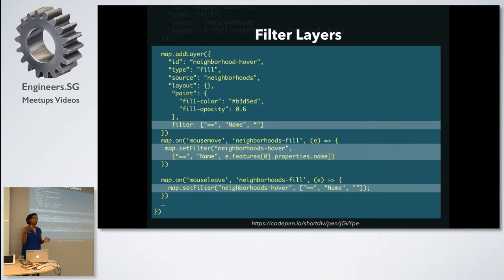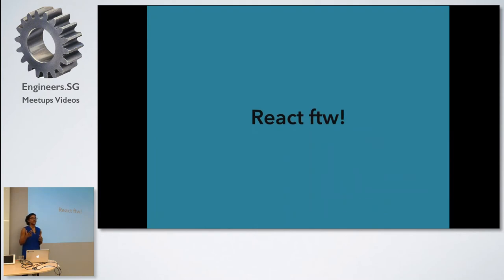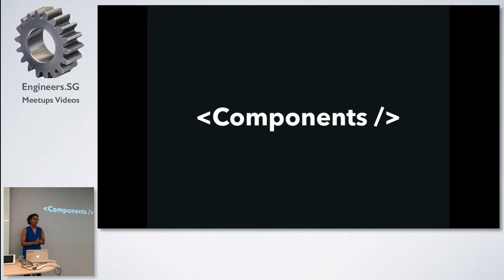As you can tell, the further along you go with mapping, the more complex things can be. As a developer there's a huge cognitive load — you have to remember the state of a layer, what layers interact with which, and how mouse events change the visuals on your map. That's where React comes in. React allows you to componentize your map, extrapolate the layers, deal with them separately, and pass down events based on whether a layer is subscribed to that event.